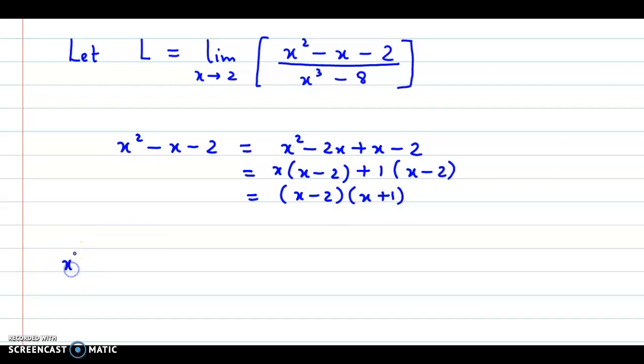For the denominator, we have x cubed minus 8. This could be written as x cubed minus 2 cubed and now we use the formula a cubed minus b cubed and perform the factorization. So it is a minus b, that is x minus 2, into a squared that is x squared plus ab plus b squared. So plus 2x plus 2 squared, 2 squared gives us 4. We have found the factors.